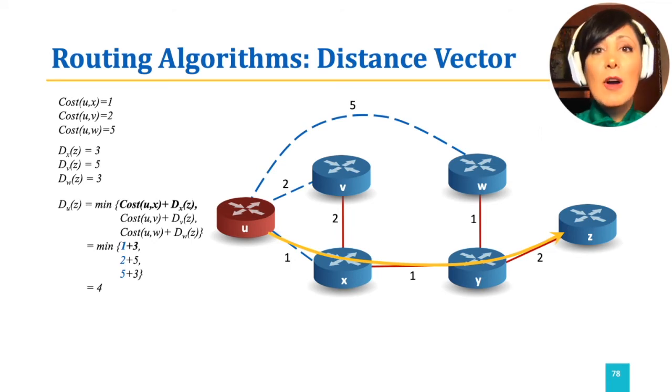Which is the minimum of 1 plus 3, 2 plus 5, and 5 plus 3. 1 plus 3, which is the path through neighbor x, is the minimum. Therefore, the next hop towards the path to z will be chosen to be the node x.